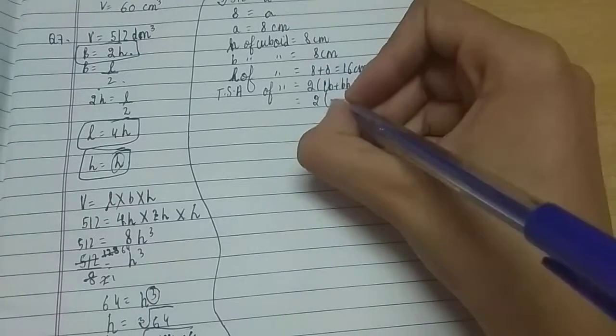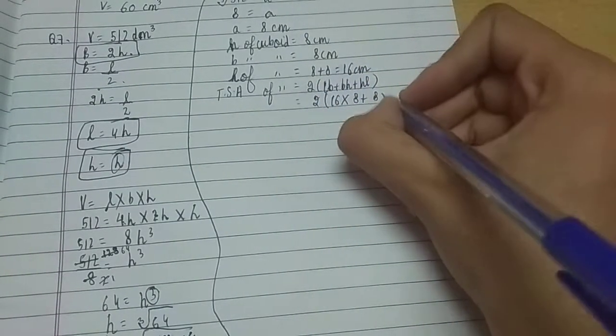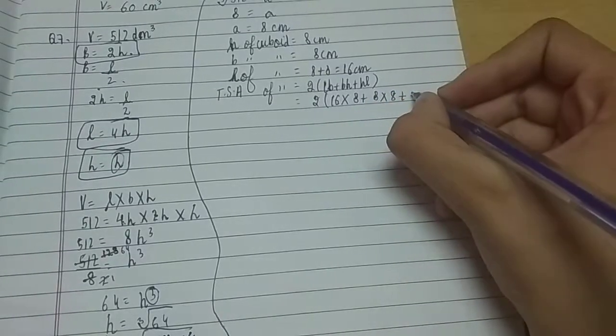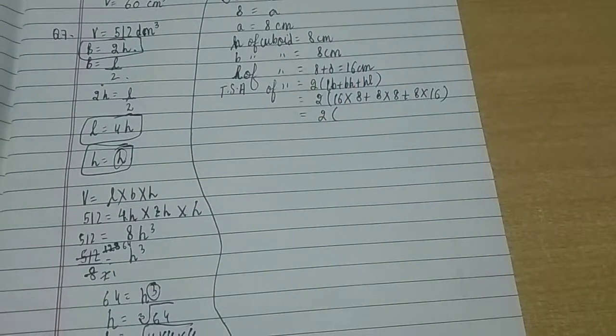So 2 × (length is 16 × breadth is 8 + breadth is 8 × height is 8 + height is 8 × length is 16). Now let's solve this further.